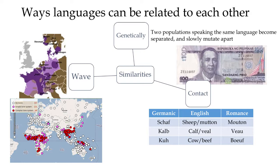This is all because of contact between two peoples who spoke very different languages but were put in touch with each other because of conquest, commerce, or immigration — rather than the wave model, which is the slow diffusion from one neighboring village to the next.